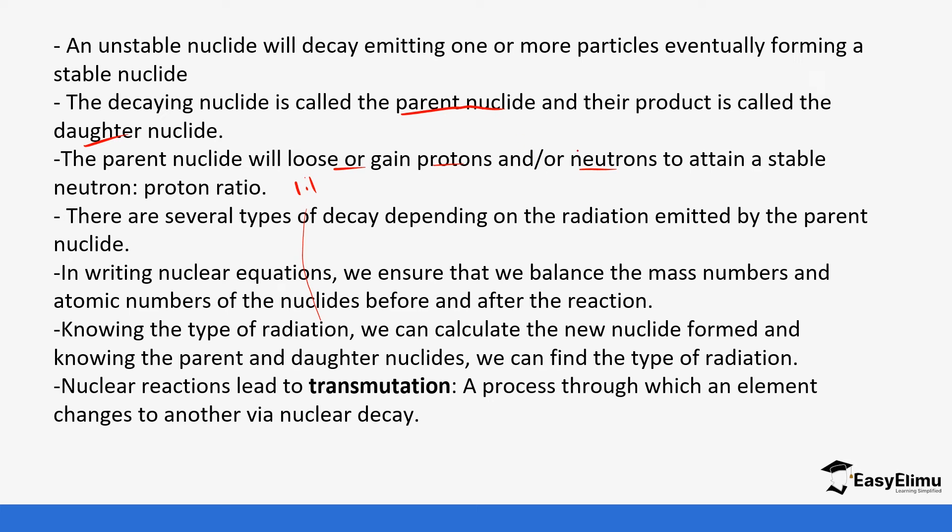When writing nuclear equations we ensure that we balance the mass number and atomic numbers of the nuclides before and after. You notice we're adding and subtracting, and we need to compare the parent nuclides and the daughter nuclides. They need to at the end of the day have equal number of mass numbers and atomic numbers. Knowing the type of radiation we can calculate the new nuclide formed, and knowing the parent and daughter nuclides you can find the type of radiation. It can go either way - you can be told to calculate an unknown nuclide like the mass number or number of protons, or you can already be given and then you are told to state which kind of radiation it underwent.